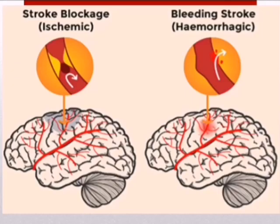So what happens if one of these arteries is occluded or ruptured? If it's occluded, that leads to ischemic stroke, and if it's ruptured, that leads to hemorrhagic stroke. These are the two major stroke types.